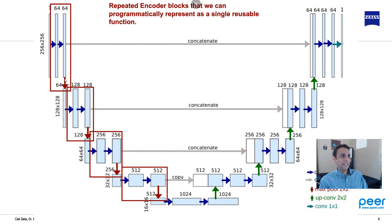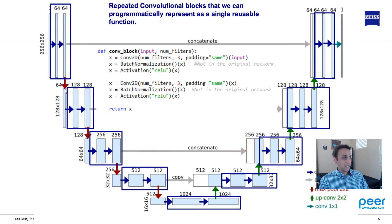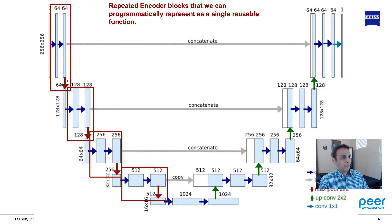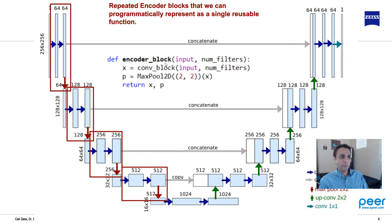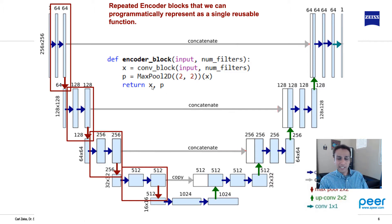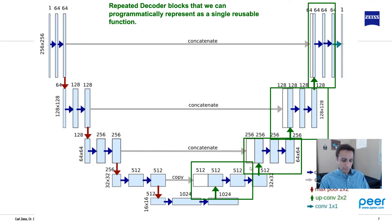The next repeating pattern is the encoder block: a convolution block plus max pooling. This appears four times going down. So we define an encoder block as a combination of convolution block and max pooling, returning two outputs — x (the convolution block output, used later for skip connections) and p (the max pooling output, which feeds the next encoder block).